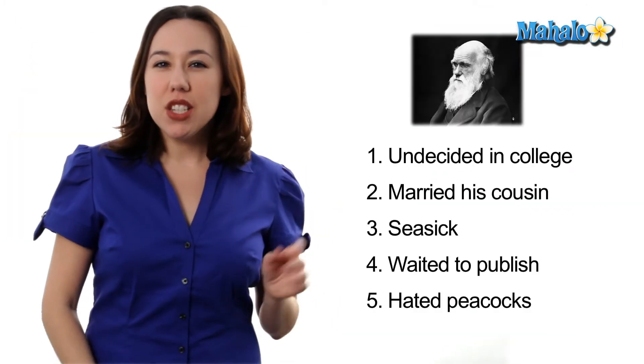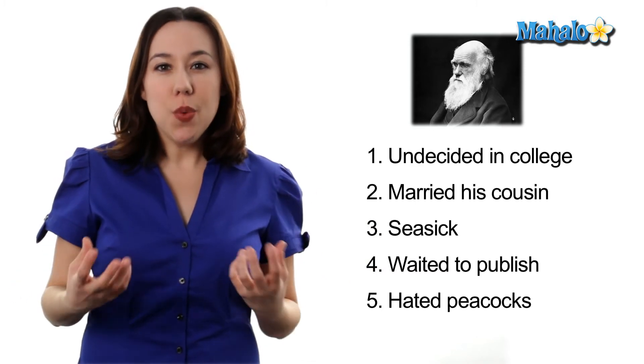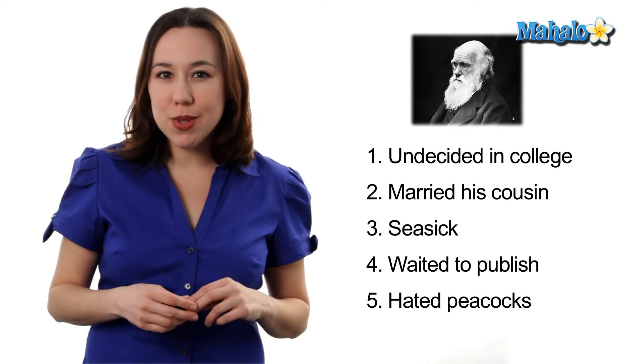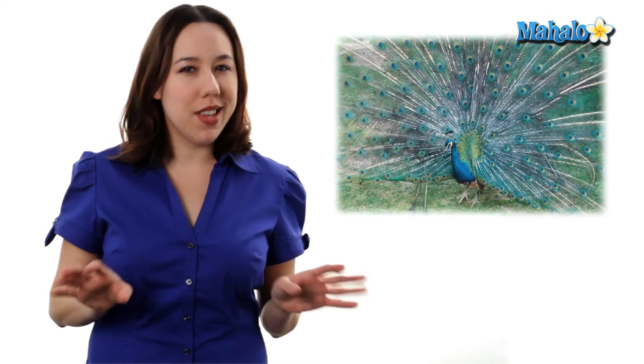Number 5. Darwin hated peacocks. He felt the extravagance of the tails was completely against his evolutionary ideas about natural selection. It was said the sight of a peacock made Darwin sick.